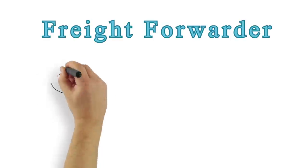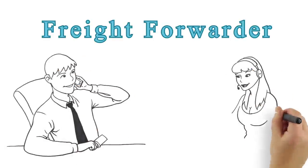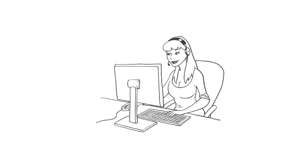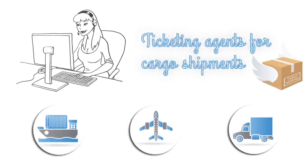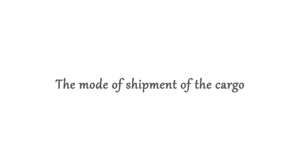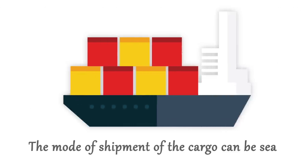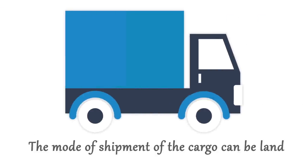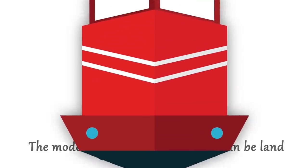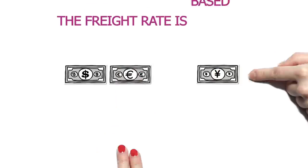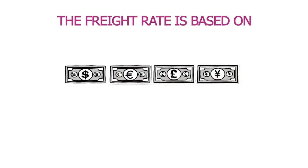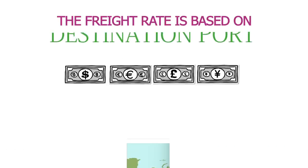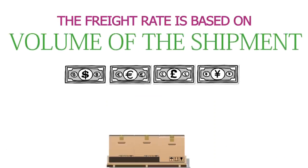First, get in touch with a Freight Forwarder. Freight Forwarders are like ticketing agents for cargo shipments. The mode of shipment of the cargo can be sea, air, land, or even multi-modal. The Freight Rate is provided by the relevant Freight Forwarder based on the mode of shipment, destination port, and the volume of the shipment.